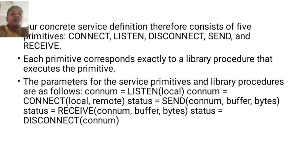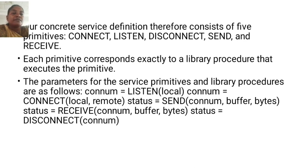The connection-oriented service definition therefore consists of five primitives: connect, listen, disconnect, send, and receive. Each primitive corresponds exactly to a library procedure that executes the primitive. The parameters for the service primitive and the library procedures are as follows.